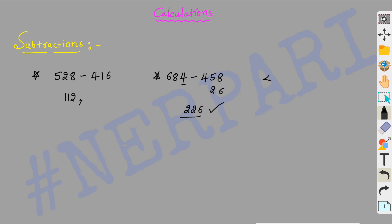So we have another number: 402 minus 369. Simple. So 369 is close to 400 - we need 100. The difference is 33.